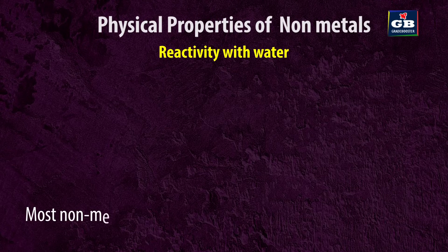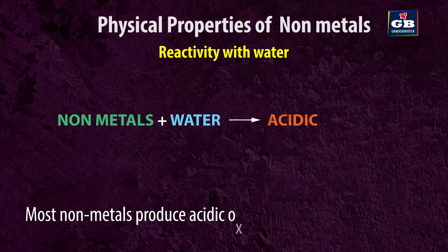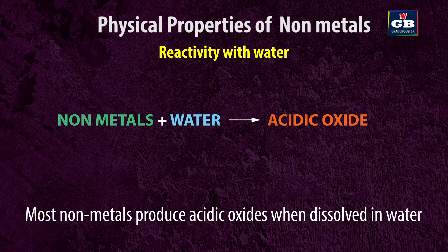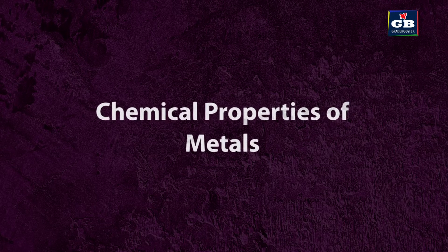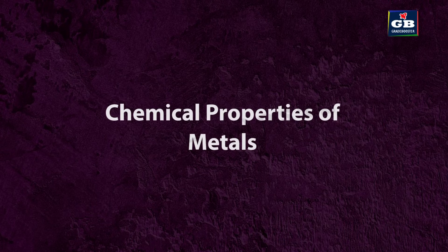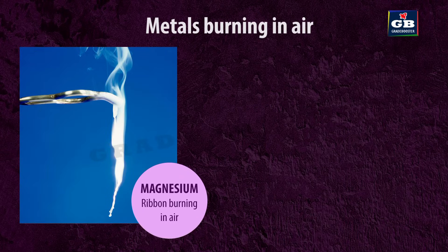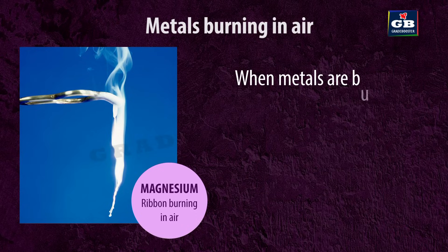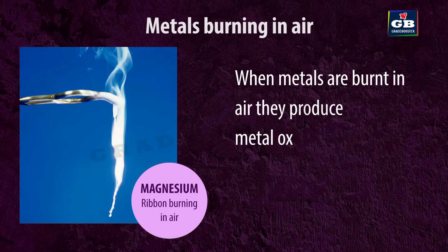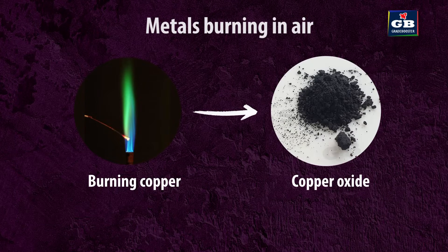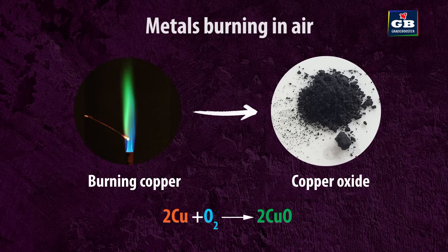Reactivity with water: Most non-metals produce acidic oxides when dissolved in water. Chemical properties of metals — metals burning in air: When metals are burnt in air, they produce metal oxide. For example, when copper is burnt in air, it produces copper oxide: 2Cu + O₂ → 2CuO.